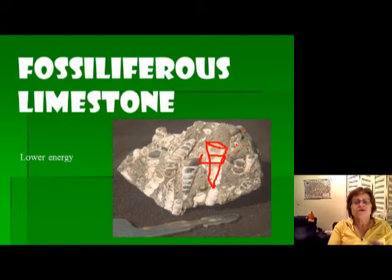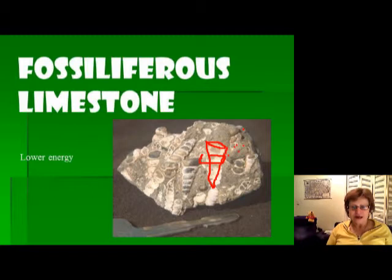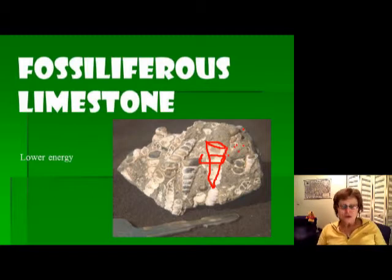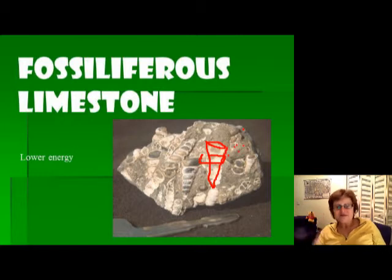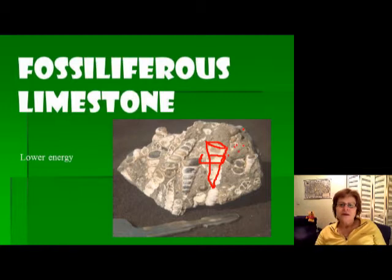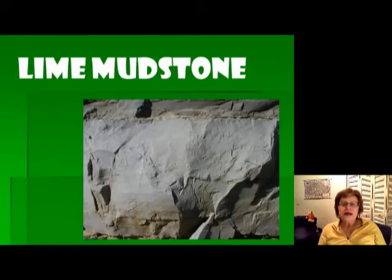So that is the color meaning — worth repeating. The fossiliferous limestone is easy to identify because it fizzes with hydrochloric acid, it has visible fossils, and it can be any color. If you see fossils and it fizzes with hydrochloric acid, you know it's fossiliferous limestone — it's that simple. The next type is the lime mudstone.